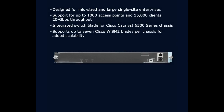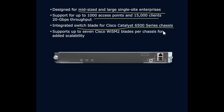The WISM-2 is actually a Catalyst 6500 module — a blade that integrates with the chassis. It's not a converged device; it's still centralized, but it fits into the 6500 and provides wireless LAN support at very high speed. For midsize to large single-site enterprises: 1,000 access points and 15,000 clients. It supports up to seven Cisco WISM-2 blades per chassis for scalability, so you can have multiple instances of these physical appliances.